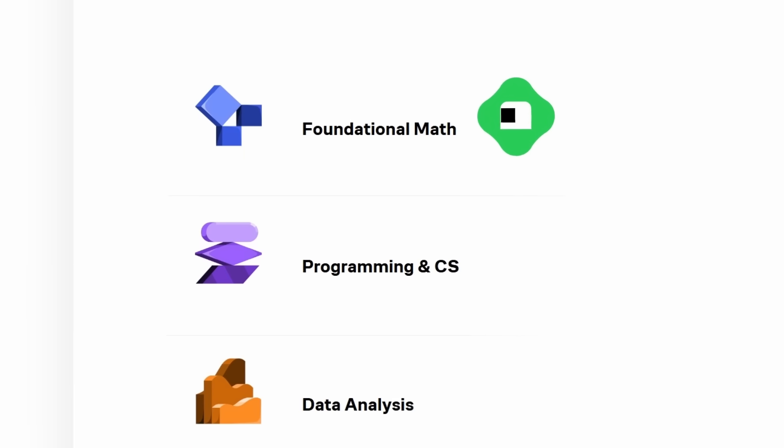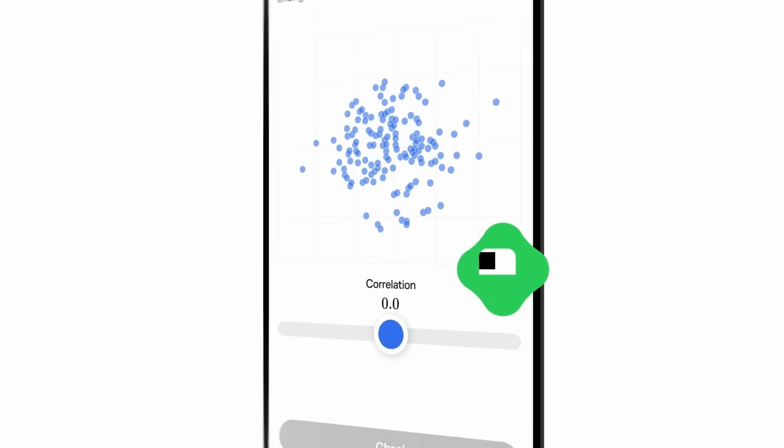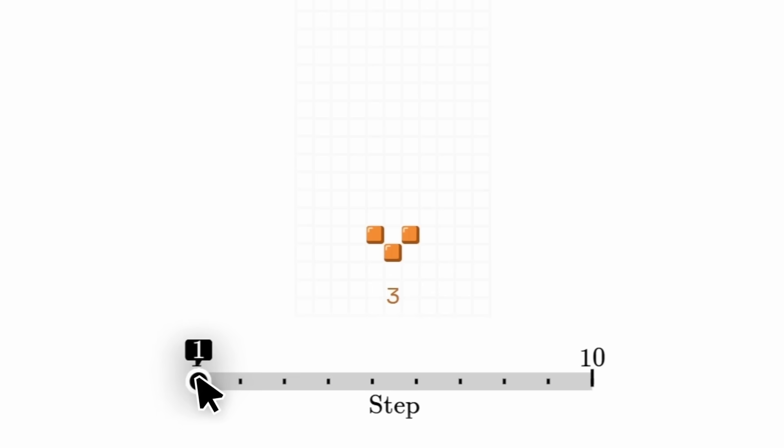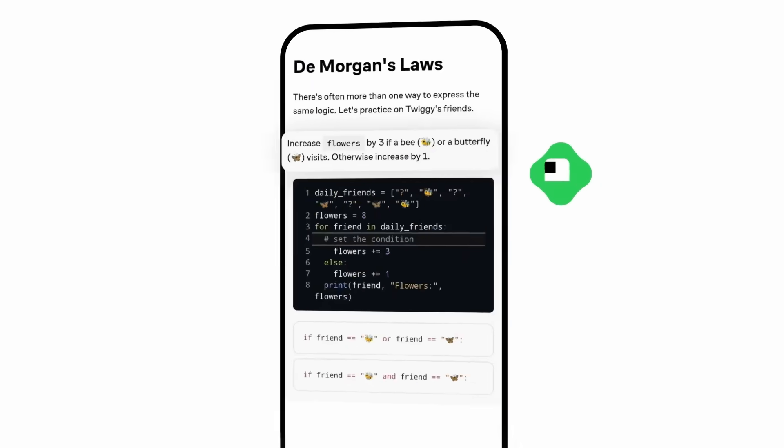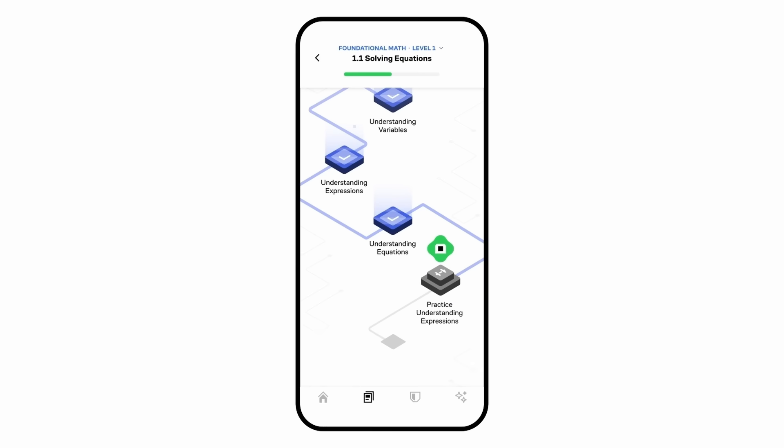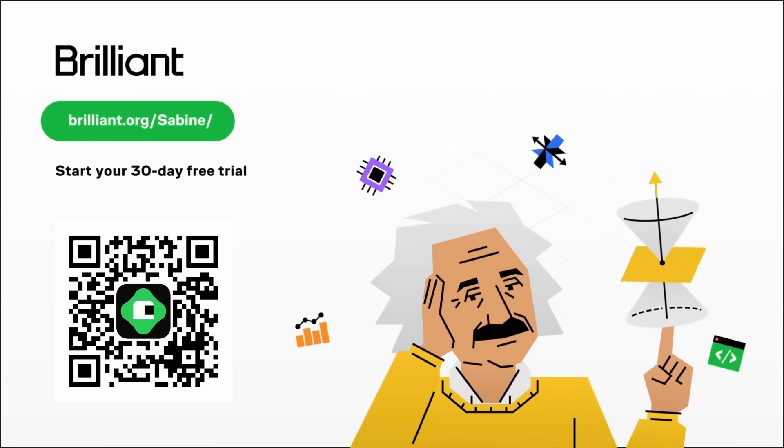If you want to brush up your physics skills, I recommend you check out Brilliant. Brilliant offers courses on a large variety of topics in science, computer science, and mathematics. All their courses have interactive visualizations and come with follow-up questions. Whether you want to learn to think like an engineer, brush up your knowledge of algebra, or want to learn coding in Python, Brilliant has you covered. It's a fast and easy way to learn, and you can do it whenever and wherever you have the time. And they're adding new courses each month. I really enjoy the courses on Brilliant because they convey a lot of knowledge very quickly. If that sounds like the right thing for you, use my link brilliant.org/sabine to give it a try. First 30 days are free, and with this link you'll get 20% off the annual premium subscription. It's an easy way to learn more and to support this channel. Thanks for watching. See you tomorrow.